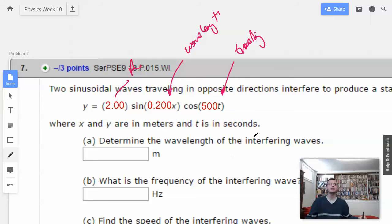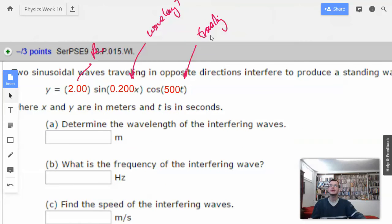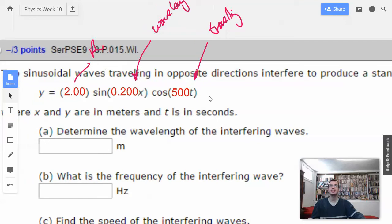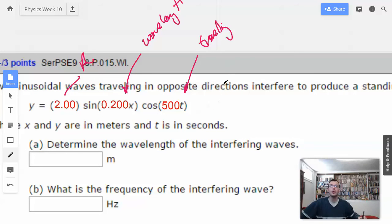Determine the wavelength of interfering waves. Maybe that has to do with the frequency. I'm going to say it has to do with the frequency, things that are time related. So we want to find the wavelength of interfering waves. T has nothing to do with wavelength, so I'm going to say that t equals 0. That way we have cosine of 500 times 0, which is cosine of 0, which is 1. So y of x equals 2 times sine of 0.2x.